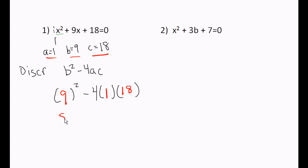So 9 squared is 81, minus 4 times 1 is 4, 4 times 18 is 72. 81 minus 72 is 9. This is a positive number.